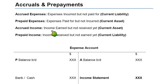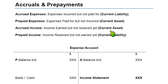Accrued income means income earned but not received yet. You have given your apartment to someone to live in but they have not yet paid you the rent — perhaps they promised to pay after three months. They have used your apartment for three months but not paid rent. For them, this is an accrued expense — a liability. But for you, this is accrued income — an asset, because you will receive those three months rent sooner or later. Accrued income is a current asset.